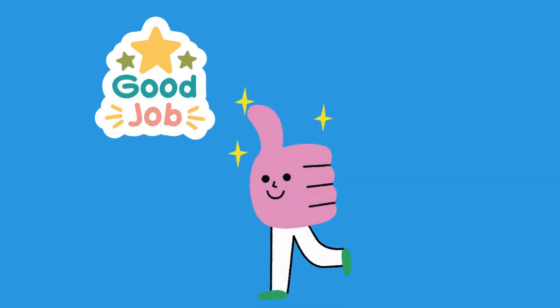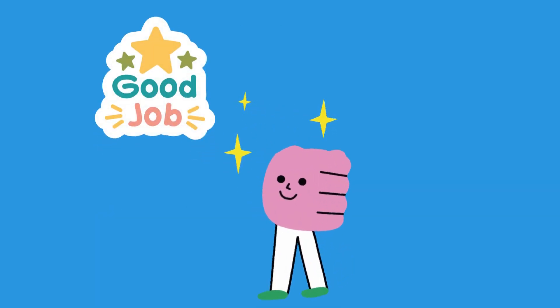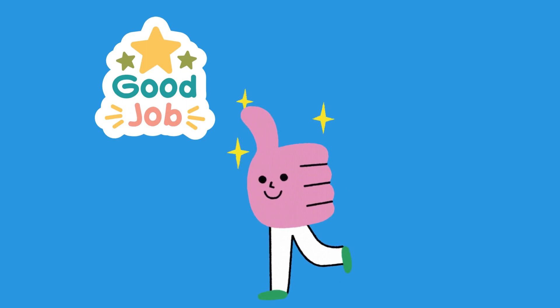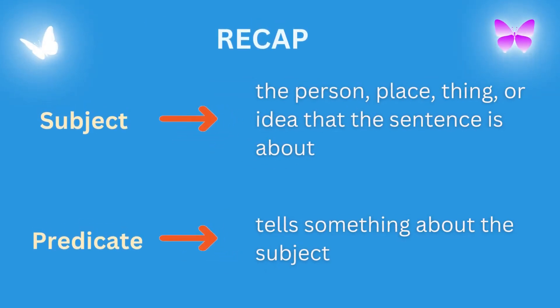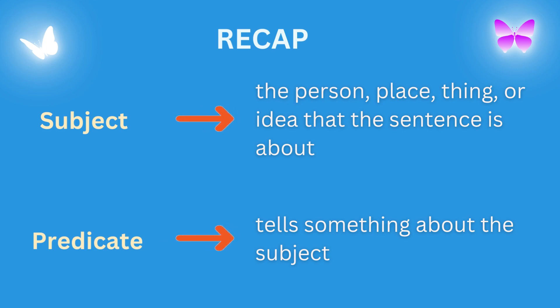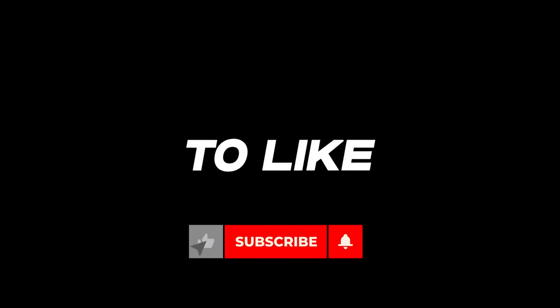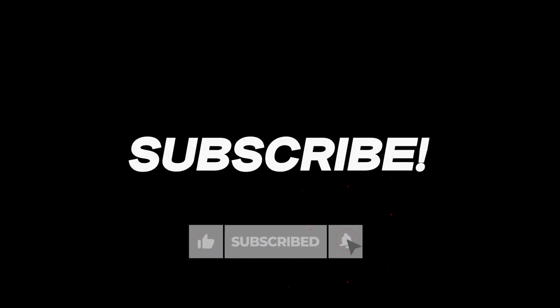How well did you do? Did you get all three right? Great job! Let's recap. The subject of the sentence is the person, place, thing, or idea that the sentence is about, while the predicate tells something about the subject. Thanks for watching. Remember to like this video and to subscribe to our channel for much more. Don't forget to share it with a friend.